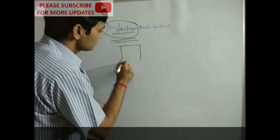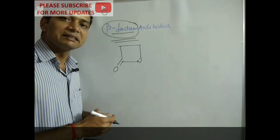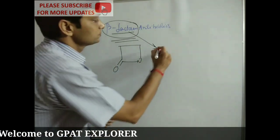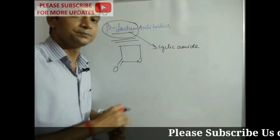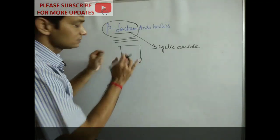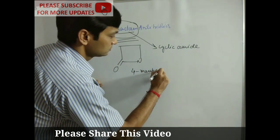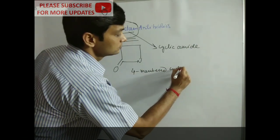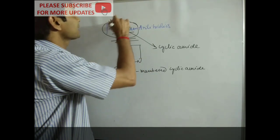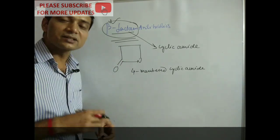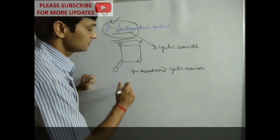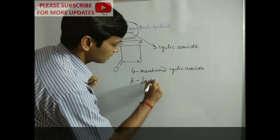The beta-lactam ring is this. Why is this ring called the beta-lactam ring? The lactam ring refers to a cyclic amide. This is a cyclic amide. The beta-lactam ring is a four-membered cyclic amide. Why is this called beta-lactam? The carbon next to the carbonyl group is designated as alpha, then this is beta, and thus this ring is known as the beta-lactam ring.